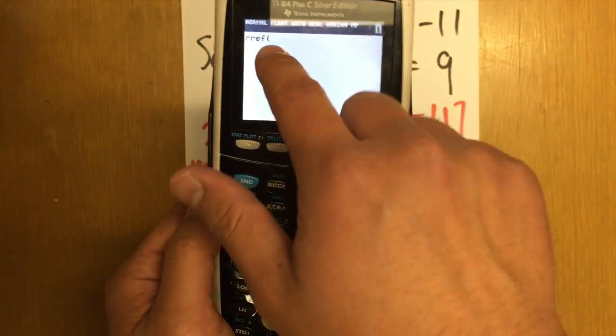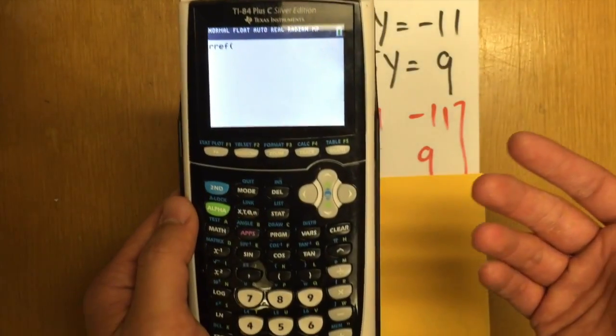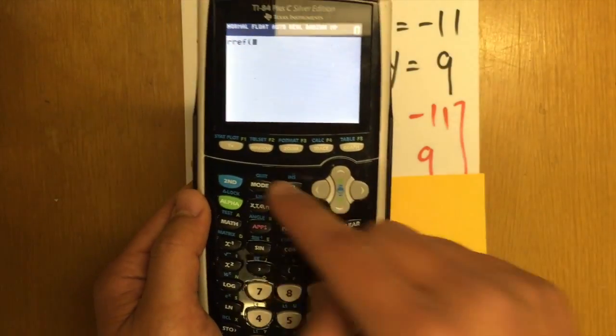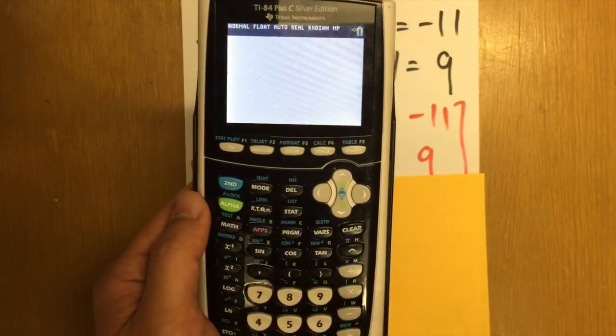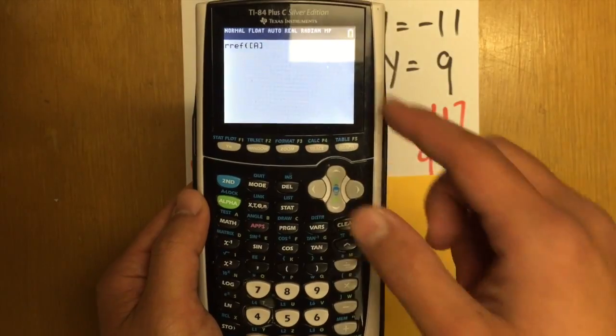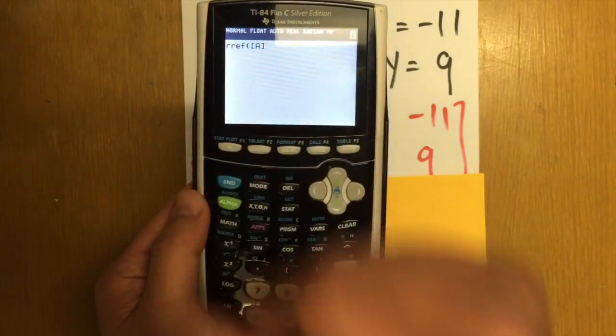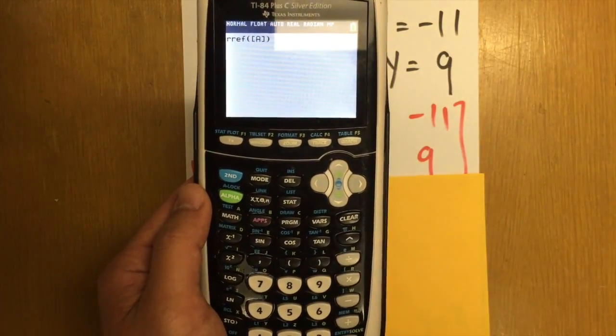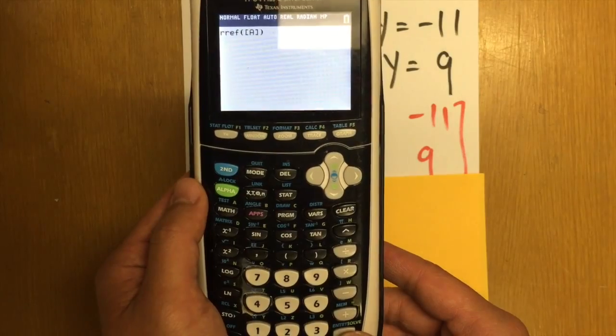Choose RREF. And then you see right here, we have to enter the matrix that we just put in, right? So we go to second matrix one more time. This time, we just have to enter. So it will put the matrix A into RREF. And then we close the parentheses. And then we hit enter one more time.